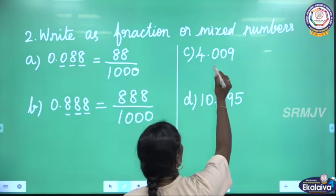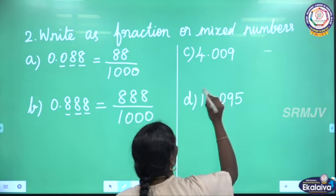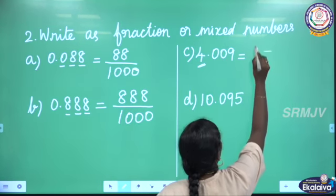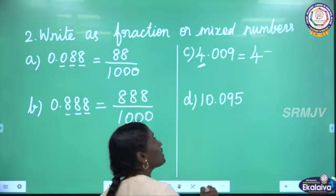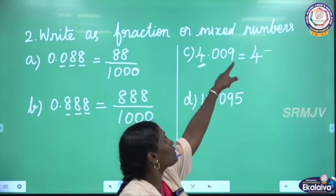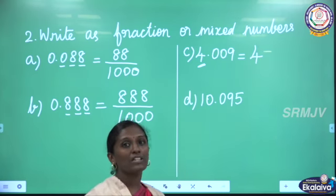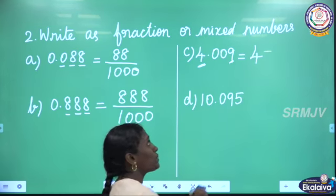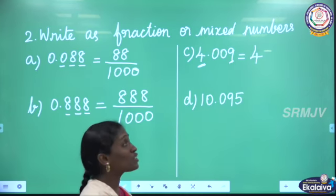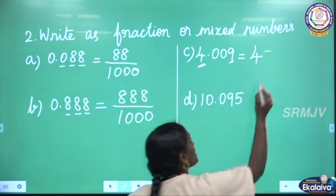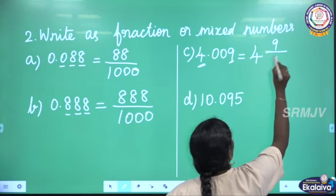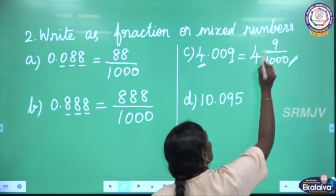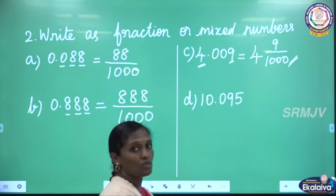The next one: 4.009. Here 4 is the whole number part. We are going to write the decimal part as a fraction. Here 9 is in the thousandth place, so the fraction for 0.009 is 9 by 1000. So this is a mixed fraction: 4 and 9 by 1000.